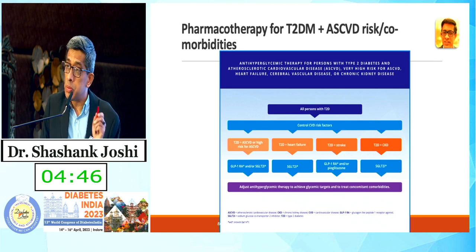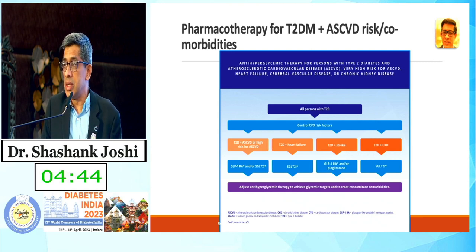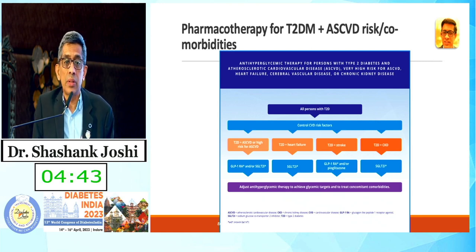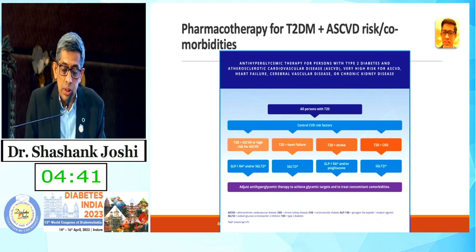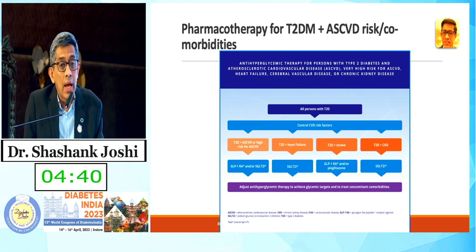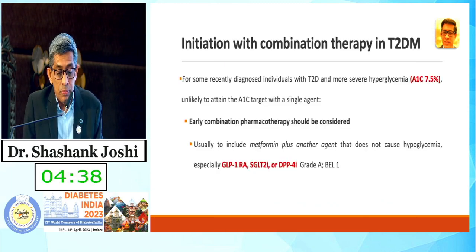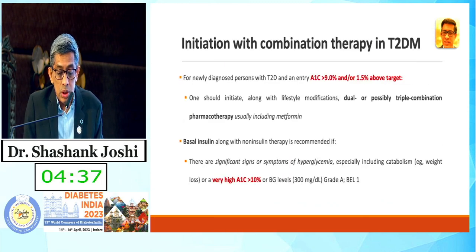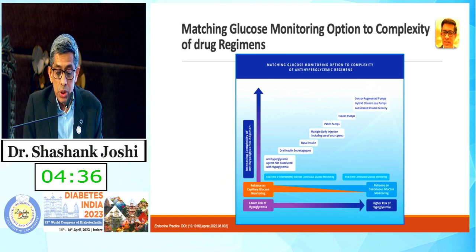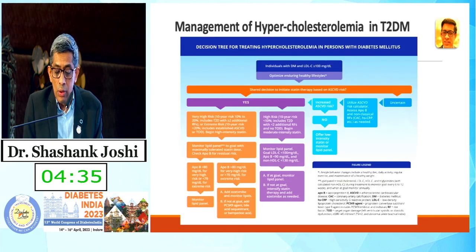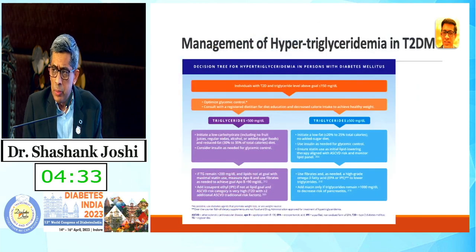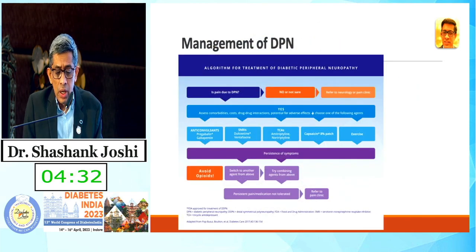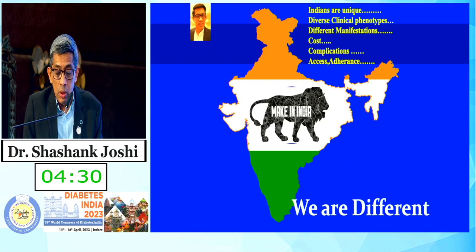One thing that misses out in the EASD guidelines is alpha-glucosidase inhibitors. ACE still includes them because some Indian situations need them. ACE has a very nice dyslipidemia algorithm, triglyceride algorithm, and neuropathy algorithm.